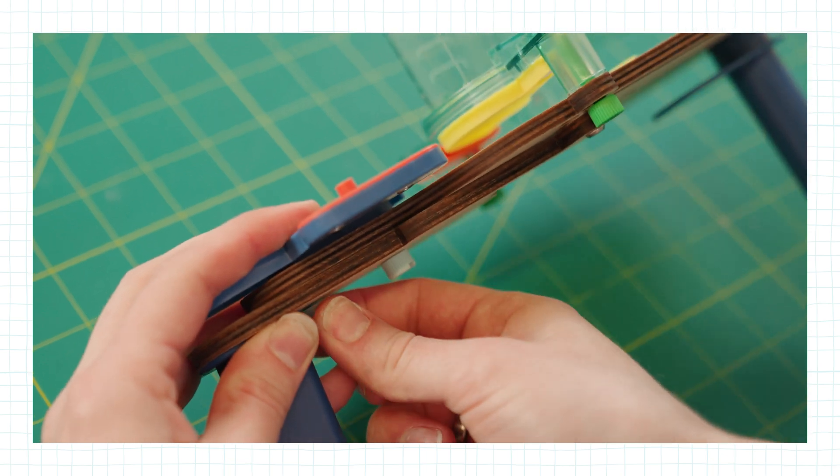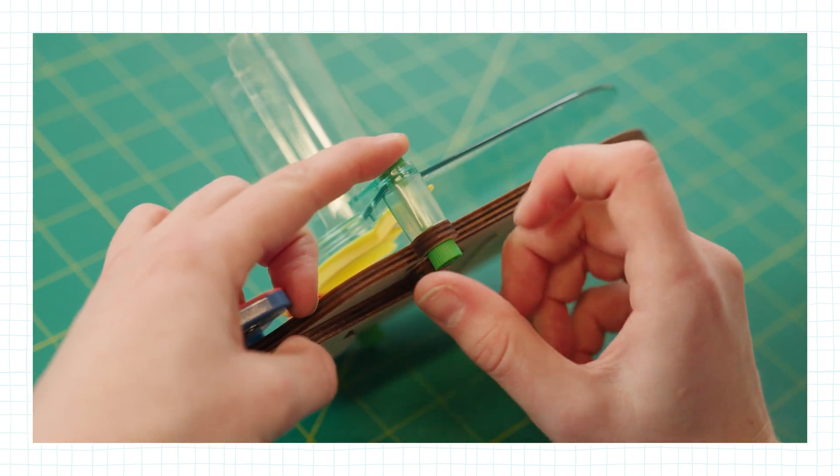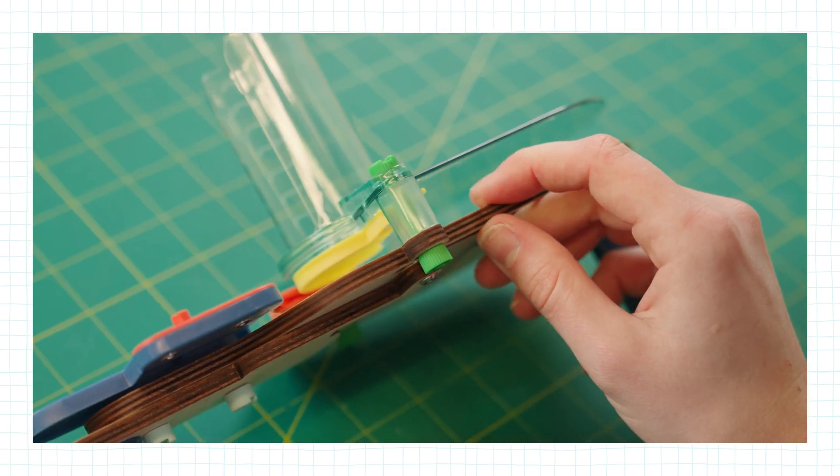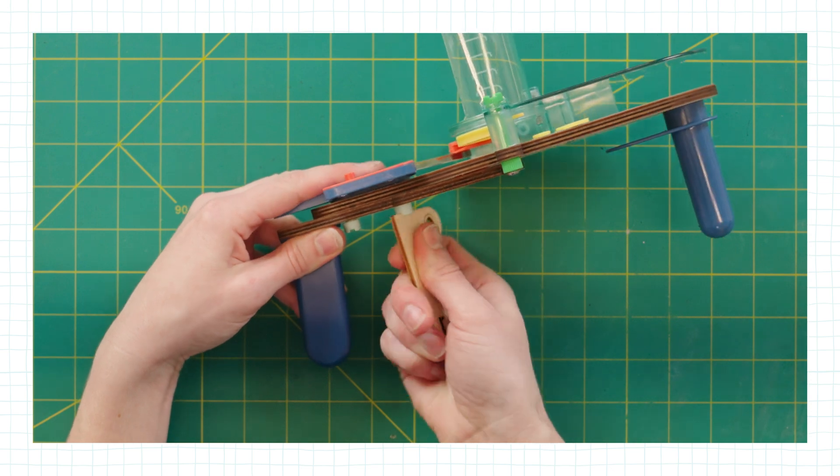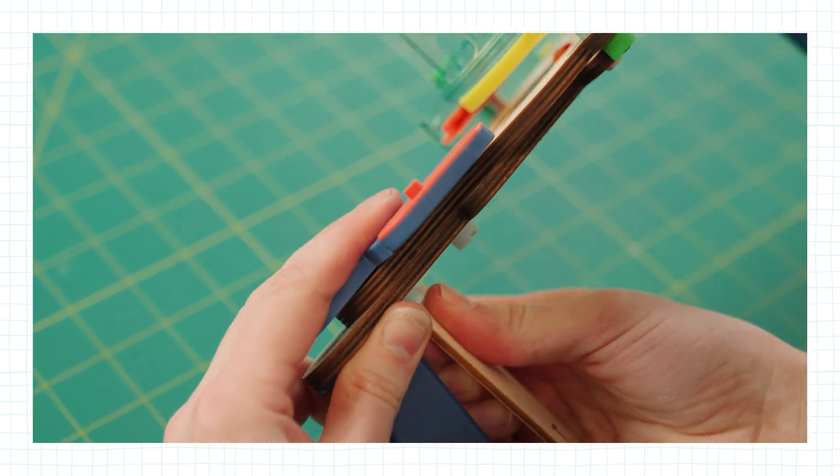So go through and make sure that your blue screws and your green screws are super tight. To make sure they're screwed down all the way, you can use any piece of three millimeter wood or coin from home.